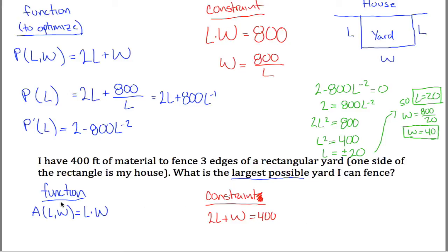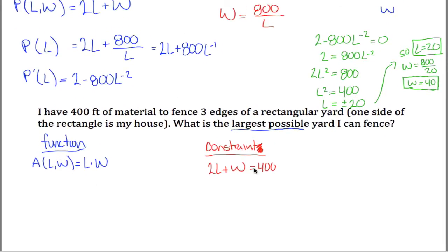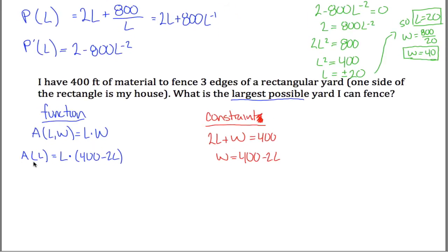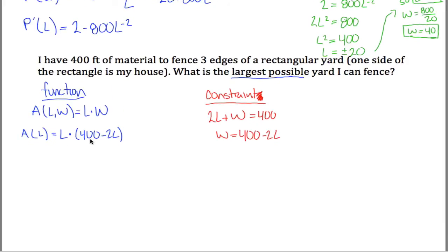I'll do the same thing: take the derivative of the area function, but I can't yet because it has two variables. So I solve the constraint for W — subtract 2L from both sides: W = 400 − 2L. Substituting into area: A(L) = L(400 − 2L). I'll distribute L through to get A(L) = 400L − 2L², which is easier to differentiate.